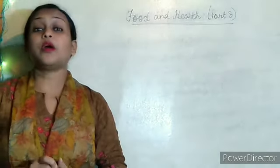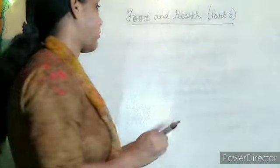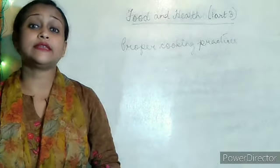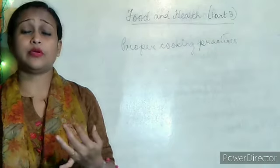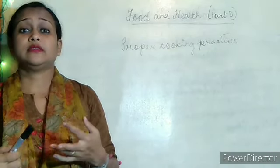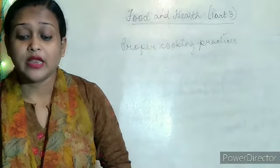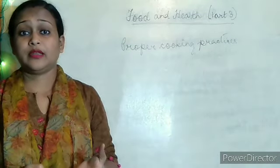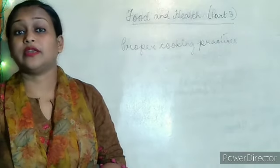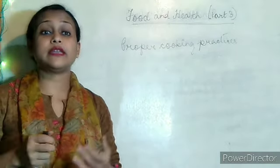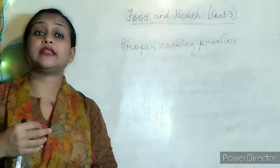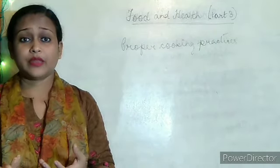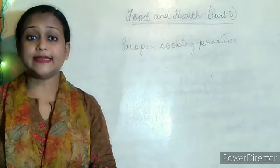Now we will be talking about proper cooking practices. We have already discussed that different types of food contain different types of nutrients — carbohydrates, fats, vitamins, minerals, and proteins. If the food is not cooked properly, these nutrients will be destroyed and we will not get the proper amount of nutrients from the food. Some food we eat raw and some food needs to be cooked before eating.